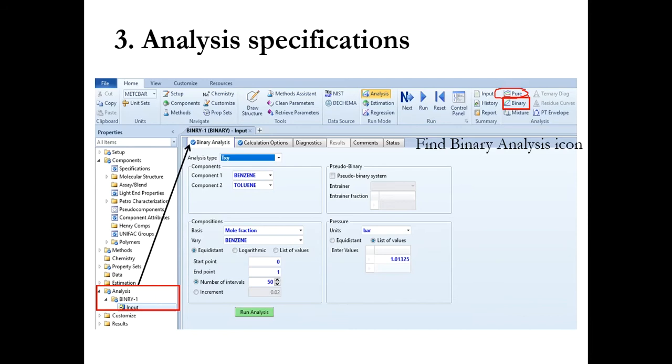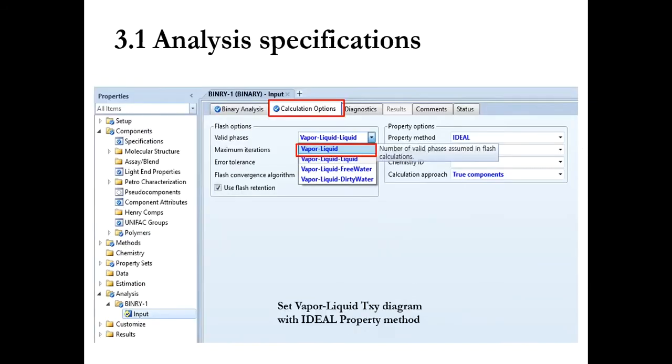But now it's a binary mixture so we will click binary, and after that in binary analysis first we will select the TXY as analysis type. After that we will select it as PXY diagram and benzene and toluene are selected as components. The mole fractions are already given from 0 to 1 with 0 as minimum and 1 as the maximum.